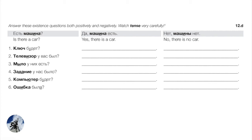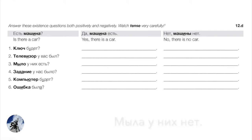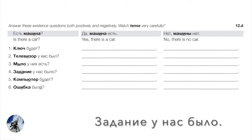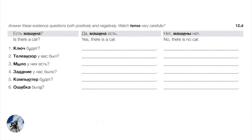Number three — do they have soap? Positive: Да, мыло есть. Мыло у них есть. Negative: Нет, мыла у них нет. Number four — Задание у нас было? Did we have an assignment? Positive: Да, задание было. Negative — switching to the non-existence idiom: задания не было. Задания у нас не было. Remember задание goes into the genitive for non-existence.